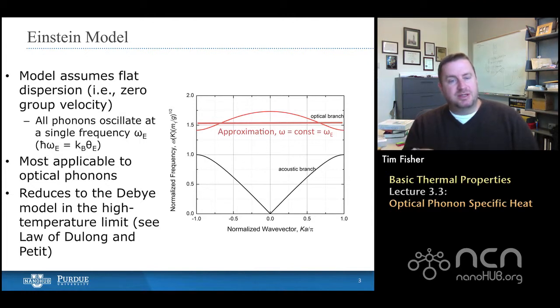And this optical branch tends to be flatter than the acoustic branch, and so the Einstein approximation, which when it was made, I believe it was made to be general, but it applies particularly well to this optical branch, and not so much to the acoustic branch. Although, in the high temperature limit, the Debye and the Einstein models for all branches converge to the same value, and we'll see that a little bit later today.